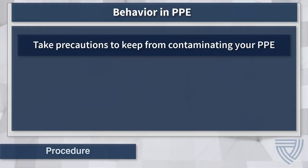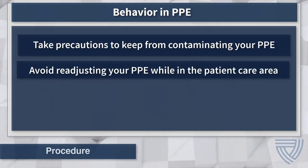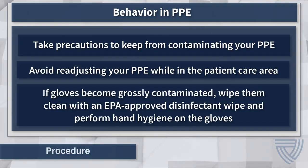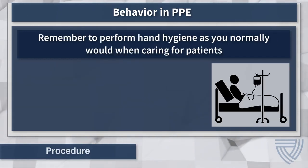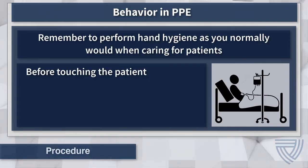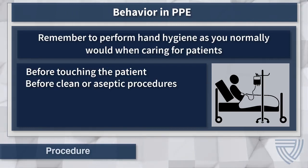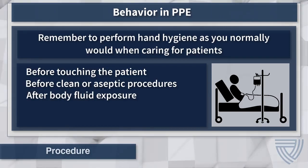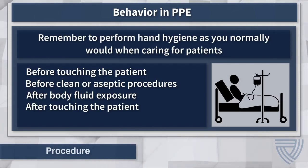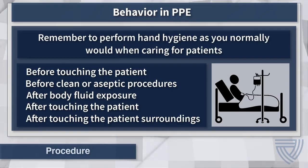Health care workers caring for patients with COVID-19 must take precautions to keep from contaminating PPE. Do not readjust PPE while in the patient care area. If gloves become contaminated, wipe them clean with an EPA-approved disinfectant wipe and perform hand hygiene on the gloves. Hand hygiene should be performed as usual when caring for patients, including before touching a patient, before clean or aseptic procedures, after body fluid exposure, after touching a patient, or after touching the patient's surroundings.